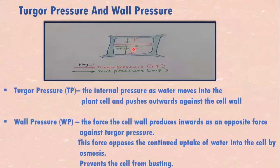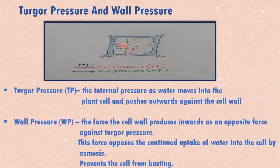I drew a plant cell like this. The key: turgor pressure is red, wall pressure is green. You see turgor pressure acting outwards on the cell wall and wall pressure acting inwards.